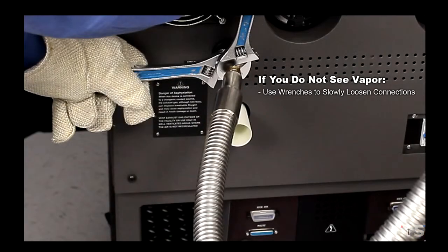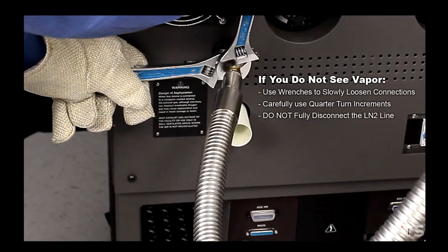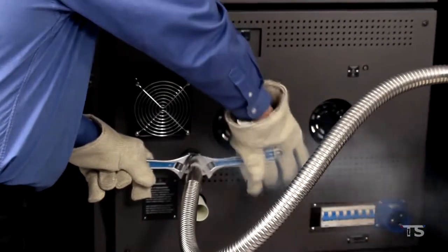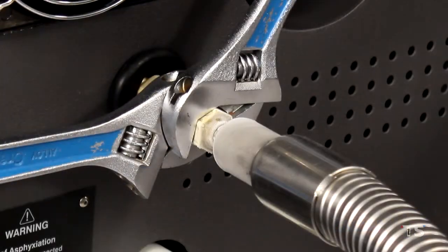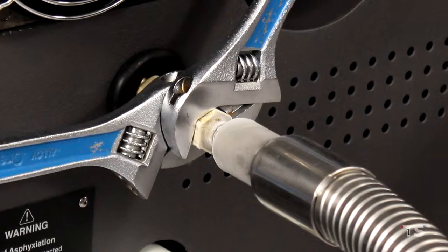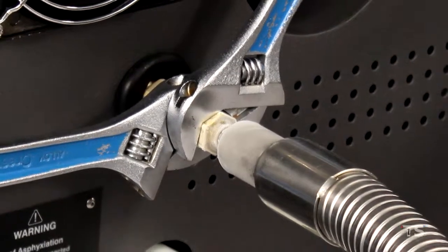If you do not see the vapor, use your wrenches to slowly loosen the hand-tightened connections. Carefully use quarter-turn increments. You do not want to fully disconnect the LN2 line from the cryo inlet. Once you are sure that gaseous nitrogen vapor is present, wait for the cryo inlet fittings to frost up. Once the fittings have frosted up, use your wrenches to fully tighten the connections.